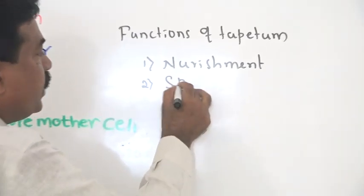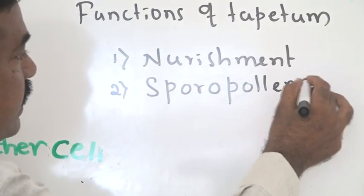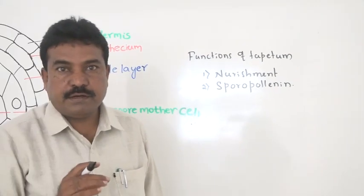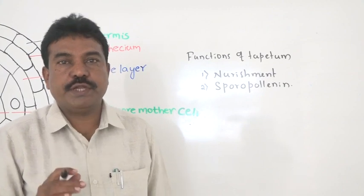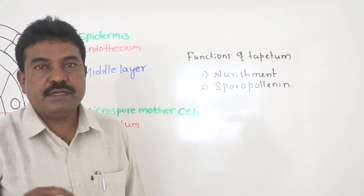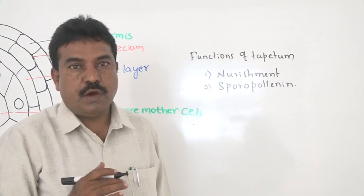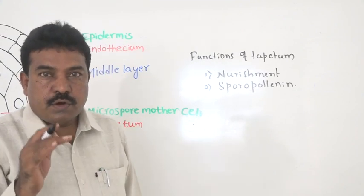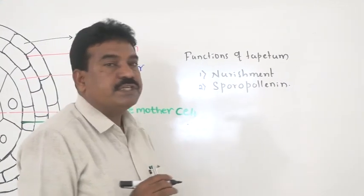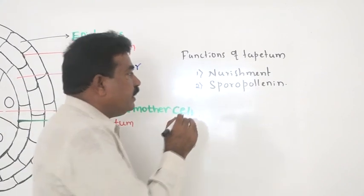The tapetum plays a very important role in the secretion of sporopollenin, a substance present on the outer coating of the pollen grain. Generally, pollen grains have two coatings: one is the intine, which is the inner covering, and the other is the exine, which is the outer covering. Exo refers to outer. That outer coating of the pollen grain is covered by a specialized polysaccharide called sporopollenin, which is secreted by the tapetum.